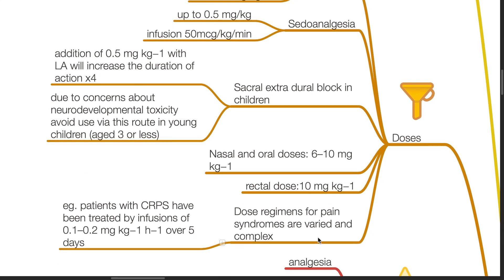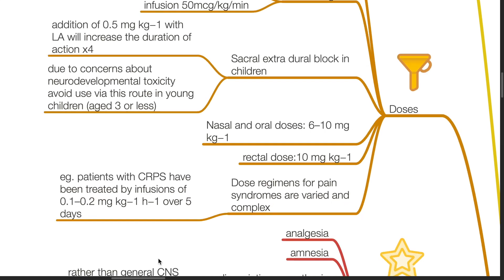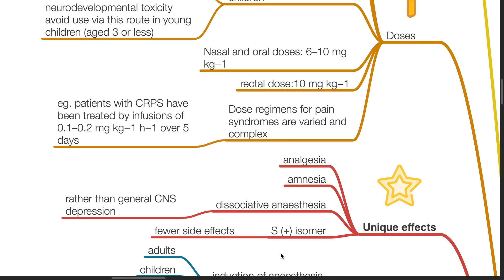Dose regimens for pain syndromes are varied and complex. For example, patients with CRPS have been treated with infusions of 0.1 to 0.2 mg/kg/hour over 5 days. Unique effects of ketamine include analgesia, amnesia, and dissociative anesthesia rather than general CNS depression. The S-dextroisomer has fewer side effects.